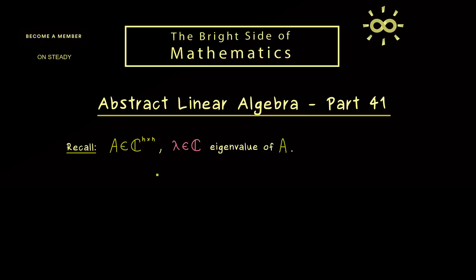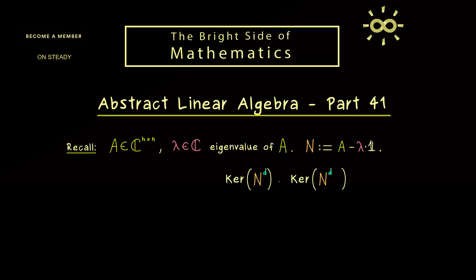The setup is always the same: we fix a square matrix A and an eigenvalue lambda. Then we can form a new matrix N, where we just shift this eigenvalue. We know that the kernel of this matrix N is non-trivial, because we have eigenvectors corresponding to the eigenvalue. We can also look at the powers of this matrix N to possibly increase the kernel. However, it turns out that there is a minimal index D such that the kernel does not increase any more, and exactly this number D is what we call the fitting index.